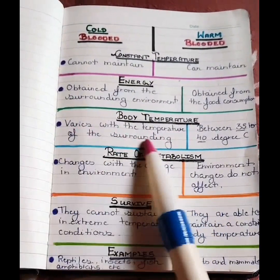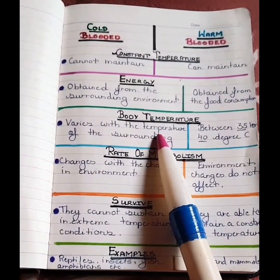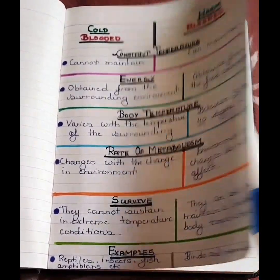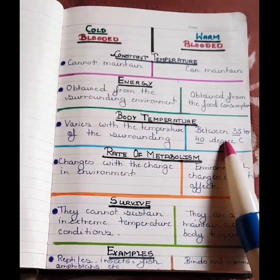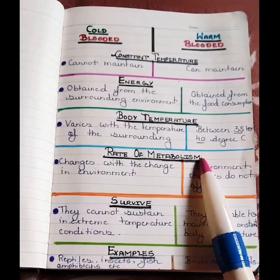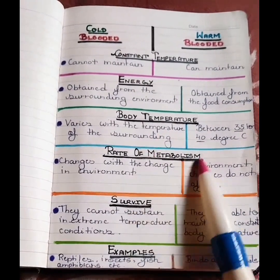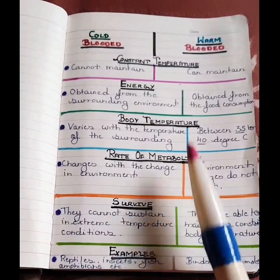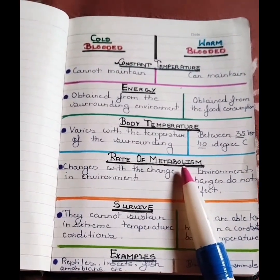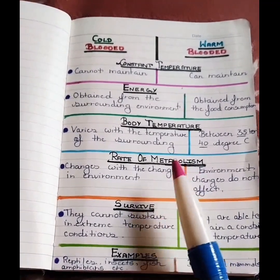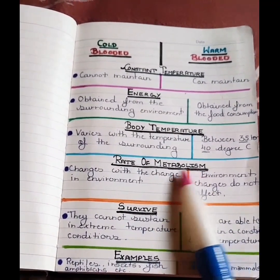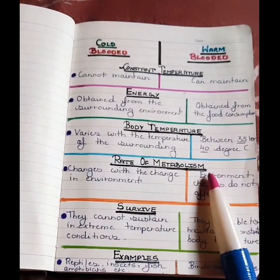Now come to the fourth point, rate of metabolism. So what is metabolism first of all? As we all know, our body needs energy to do everything from moving to thinking to growing. The metabolism is the whole sum of reactions that occur throughout the body within each cell and that provide the body with energy.